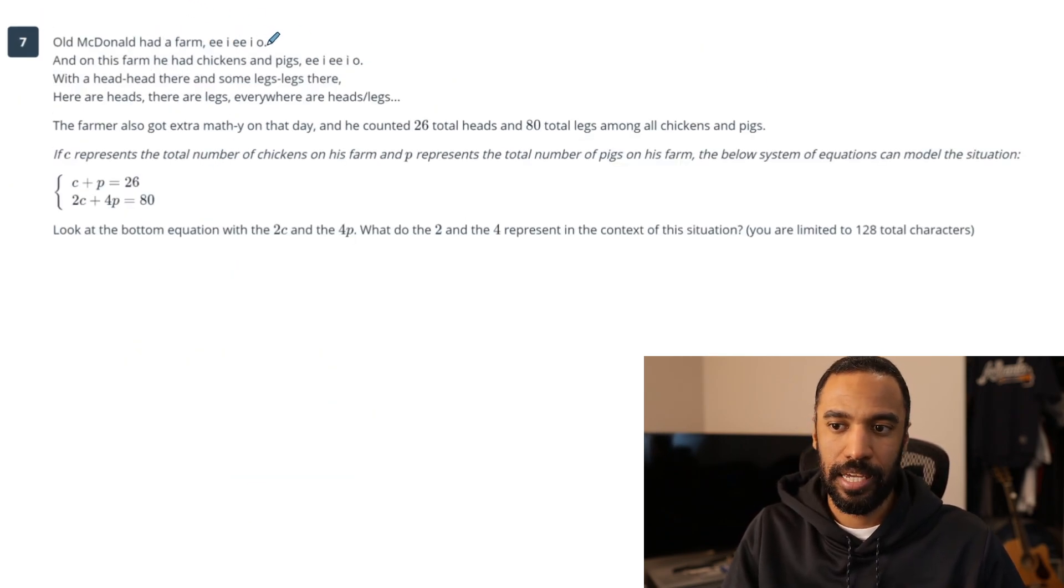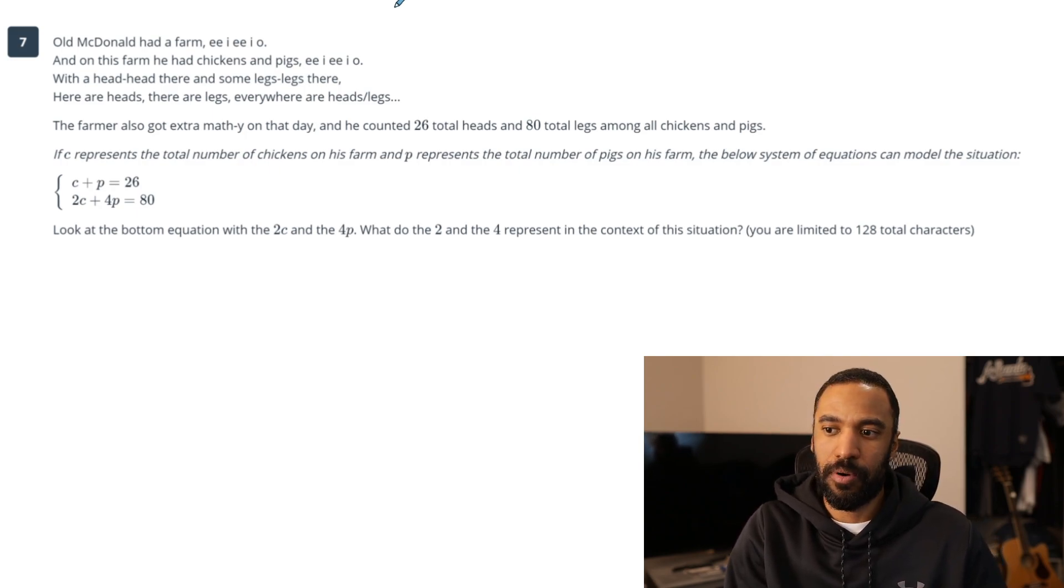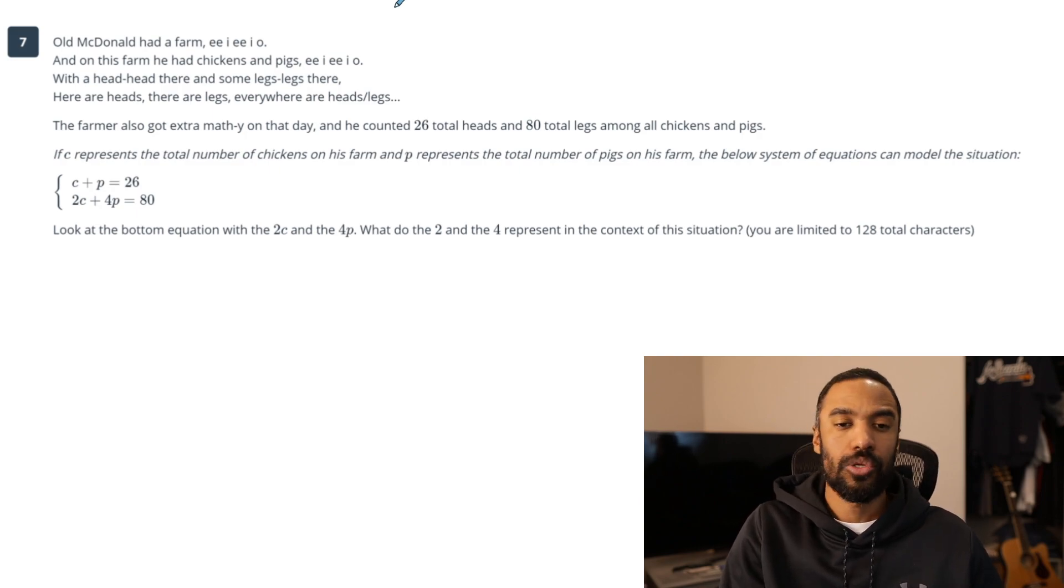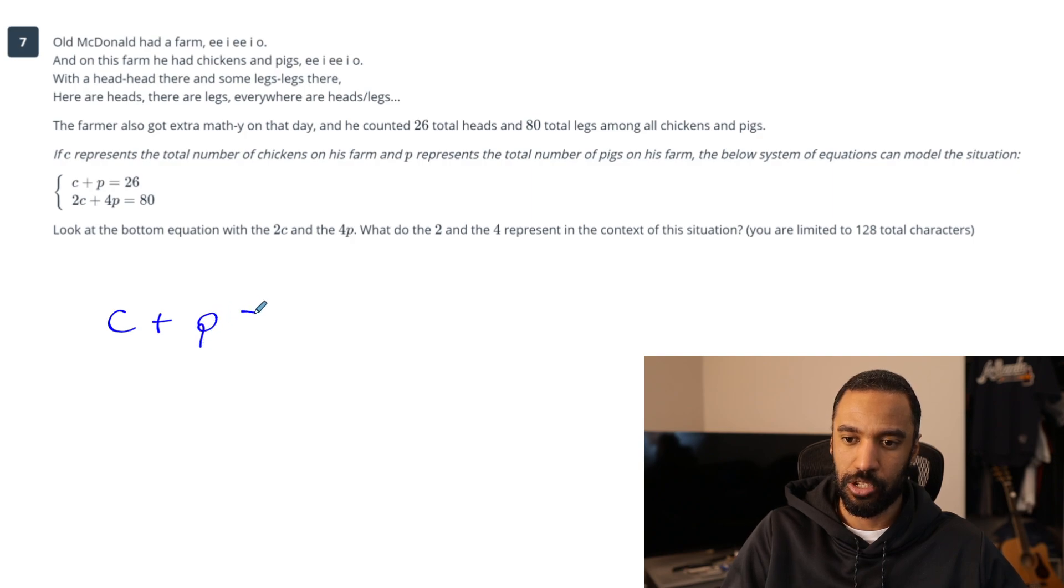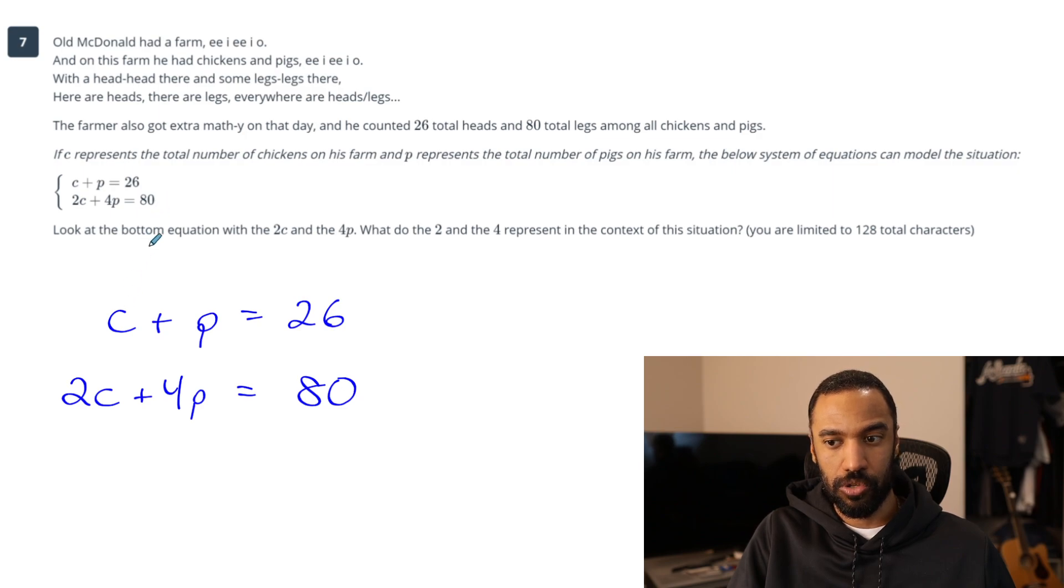Number seven: Old McDonald had a farm, and he counted 26 total heads and 80 total legs among all chickens and pigs. If C represents the total number of chickens and P represents the total number of pigs, which system of equations can model the situation? Each chicken and each pig have one head. So the number of heads you count are also the number of animals. C plus P equals 26, that's 26 total farm animals of chickens and pigs.